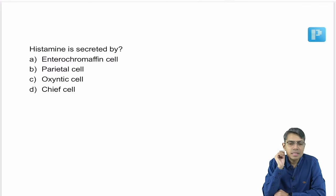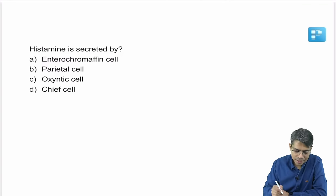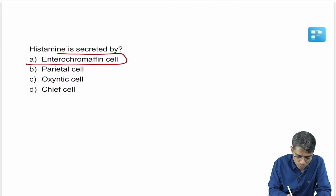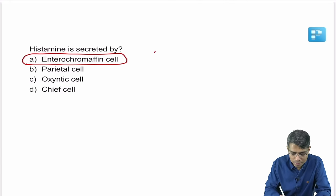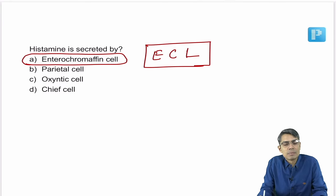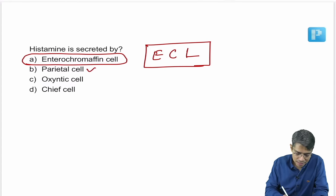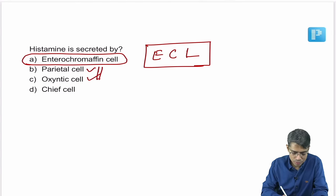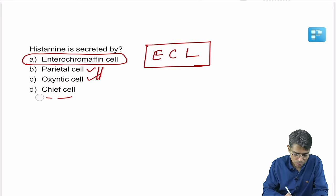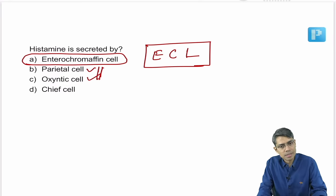Next question: histamine is secreted by — the answer is enterochromaffin-like cells. The parietal cell (oxyntic cell) produces HCl and intrinsic factor. The chief cell (peptic cell) produces pepsinogen. Histamine is secreted by enterochromaffin-like cells.